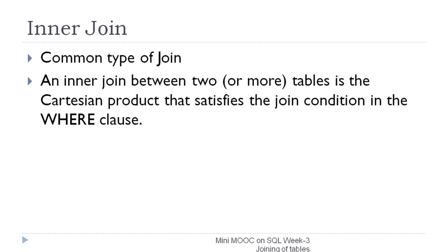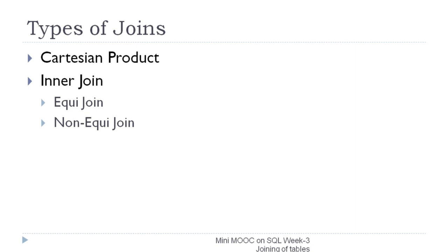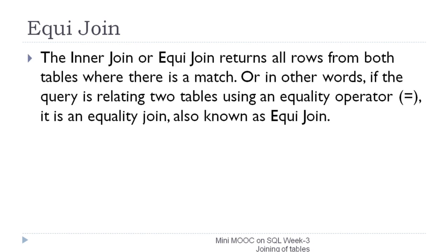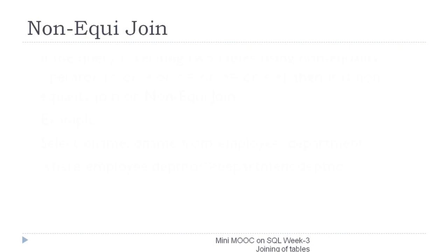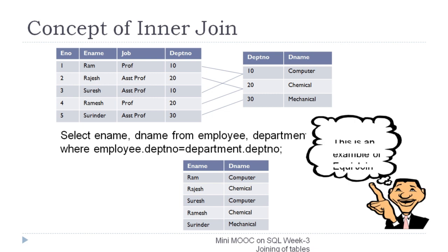Inner join is the most common type of join and is essentially a Cartesian product with a WHERE clause. So far we have discussed two types of join: Cartesian product and inner join. Inner join has two further types: equi join and non-equi join. If the WHERE condition of an inner join is based on the equality operator, it is called an equi join. A non-equi join is a case of inner join where the WHERE condition is based on less than, greater than, or not-equal-to operators. The example we discussed earlier is a case of equi inner join, since the WHERE condition uses the equality operator.